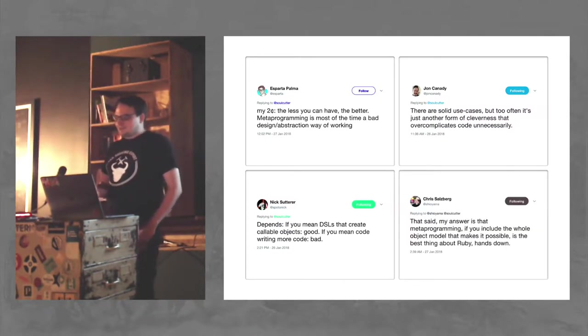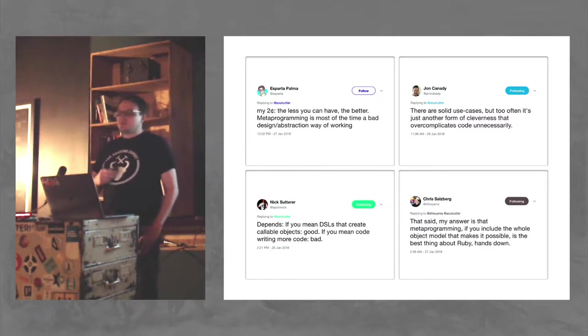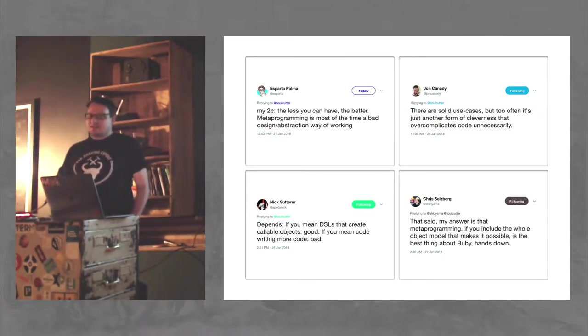But my favorite response is this one, which is more along my lines of thinking: my answer is that metaprogramming, if you include the whole object model that makes it possible, is the best thing about Ruby, hands down. So I definitely am on board with that. I think one of the best things about Ruby is the ability to metaprogram, and it's what makes Ruby expressive and fun to write.